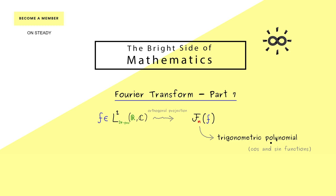What we did in the last video is describe this trigonometric polynomial with cosine and sine functions. However, we already know that we can substitute these functions with exponential functions. And in fact, this is completely equivalent, because we work in the complex numbers nevertheless. Hence, by going to the exponential functions here, we don't lose anything — we just gain simplicity.